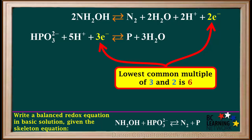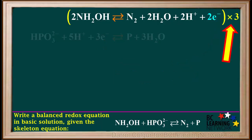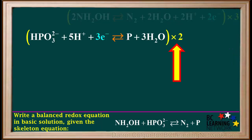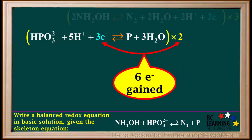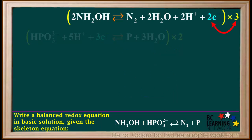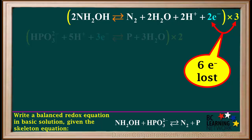The lowest common multiple of three and two is six. Therefore, we multiply by factors which will make electrons gained and electrons lost both equal to six. So, we multiply the top half-reaction by three and the bottom half-reaction by two. So, two times three equals six electrons are gained by the bottom half-reaction, and three times two equals six electrons are lost by the top half-reaction.